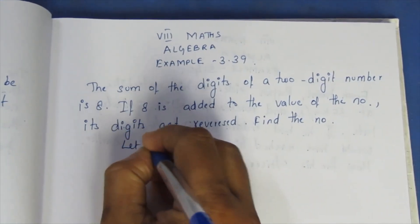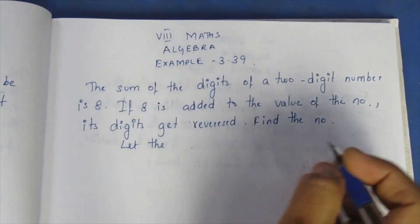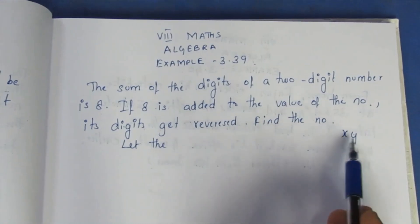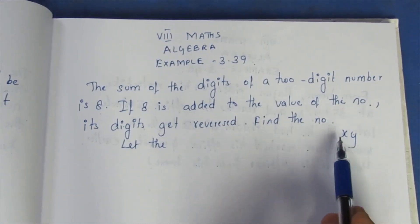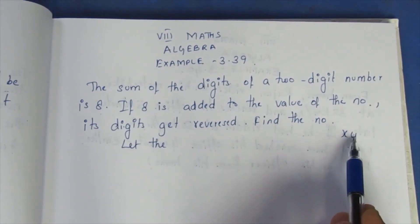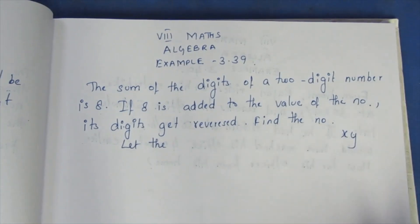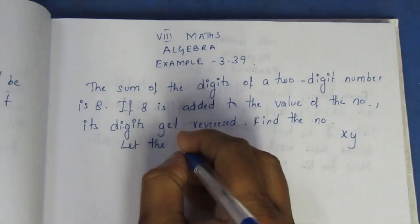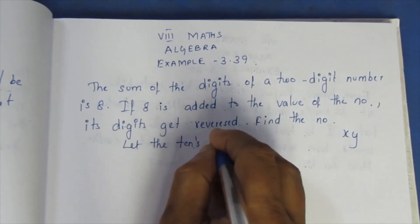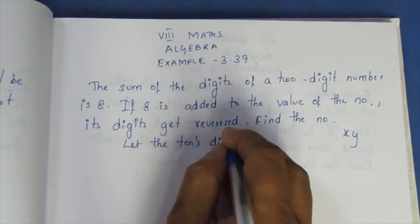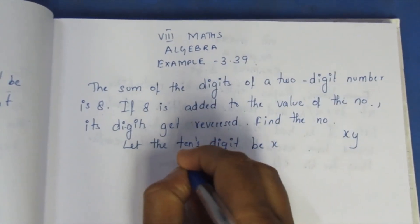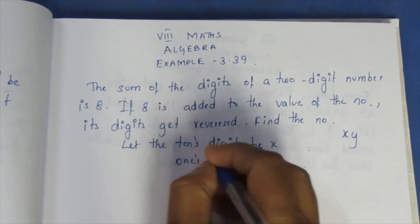Let the 2 digits be x and y. Let the tens digit be x and the ones digit be y.